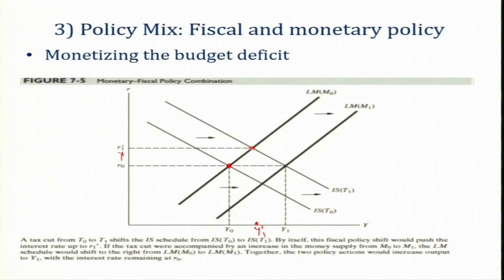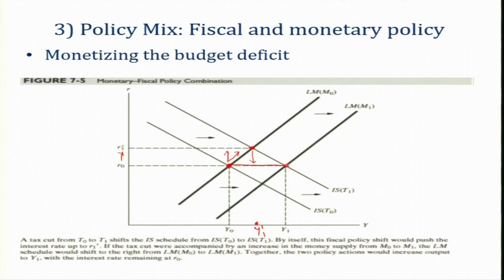The IS curve shifts to a new equilibrium position. If there is a policy mix — an accommodative monetary policy — meaning when government expenditure increases, money supply also increases and the budget deficit is monetized, then the LM curve will be shifting rightwards. When the LM curve shifts rightwards, the rate of interest will come down; the initial increase in the interest rate is neutralized by the increase in money supply. To overcome the crowding out effect, if there is an equivalent increase in money supply, output increases to Y-1.